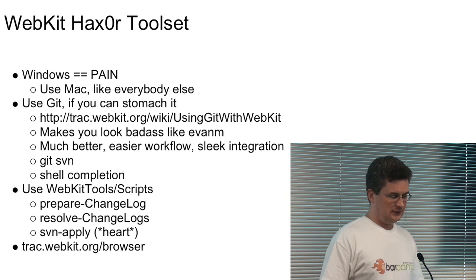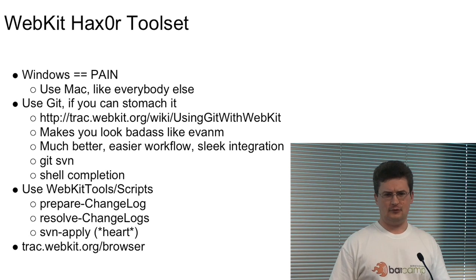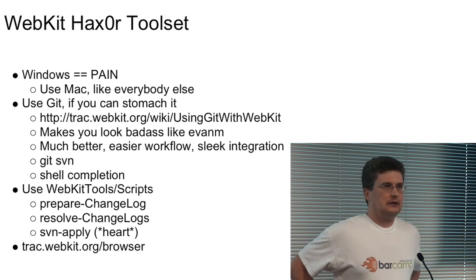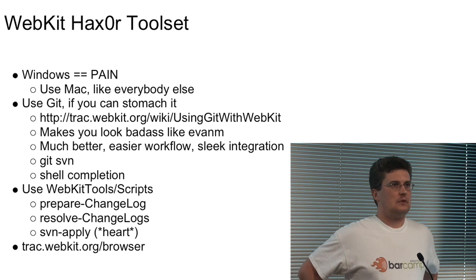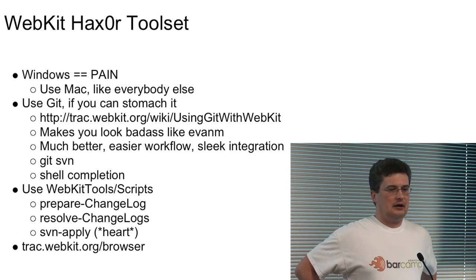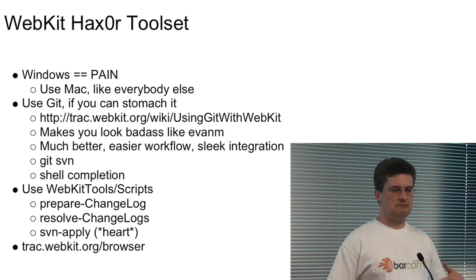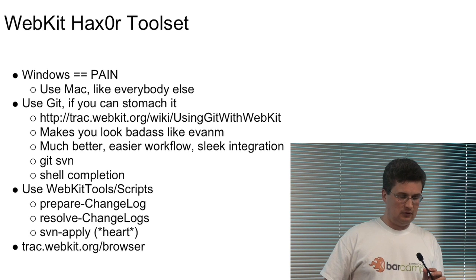Working on WebKit upstream on Windows is really painful. This is your great excuse to get a Mac. Using Git is really helpful — it facilitates a much better workflow. In WebKit, you'll often have several patches in flight awaiting review, and these patches will have to be tweaked. Having multiple checkouts in an SVN repository is just wrong. I highly recommend using a Git multi-branch workflow where you can have multiple branches in flight and then rebase.